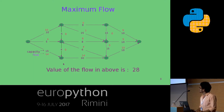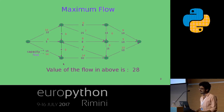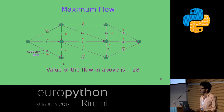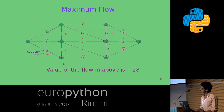This is the maximum flow that we can get from this flow network. We are pushing a flow value of 28 from the source and getting it at the sink, and all edges are satisfying the assumptions — the flow in them is less than the capacity and for each vertex conservation of flow holds. We cannot pass more than 28 units of flow through this network.